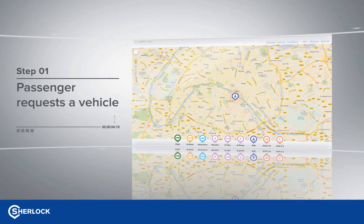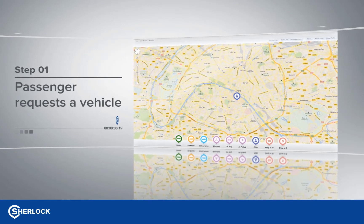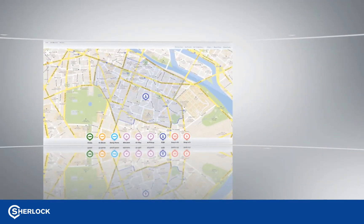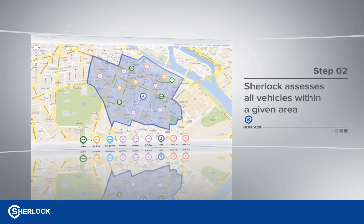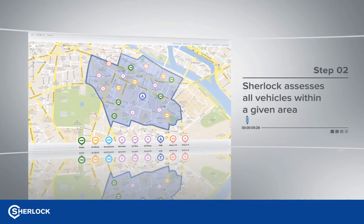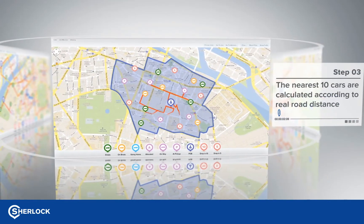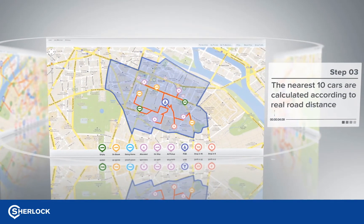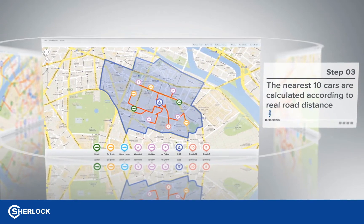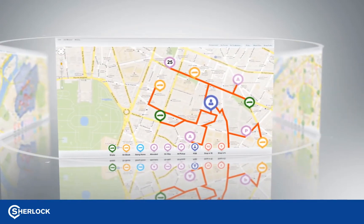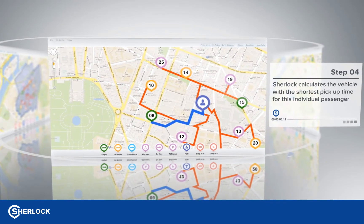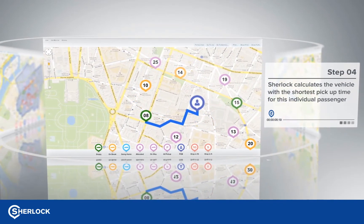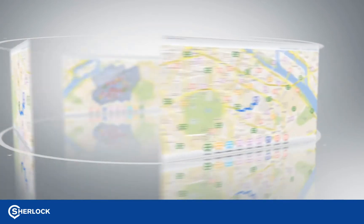After a booking confirmation is made, the allocator will begin assessing all vehicles within a certain area of the pickup address. As the allocator settings are completely configurable, allocation is tailored to individual business needs. The system will start by looking at the nearest ten cars to the pickup according to real road distance. Incompatible cars are discarded from the selection process. Once the allocator has identified the nearest cars which are suitable, the best vehicle for the passenger is then selected.